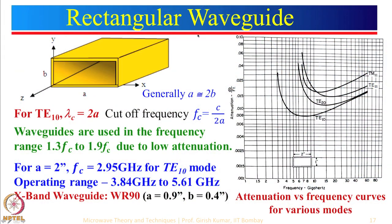A rectangular waveguide is defined by its two dimensions a and b, and of course there will be a length. The dimension a defines the cutoff frequency. If we are going to operate at the fundamental mode TE10 — what is '1 0'? The '1' means there is one half-wavelength variation across dimension a.